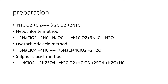Next method is the hydrochloric acid method. Sodium chlorate NaClO3 is treated with hydrochloric acid. You are going to get 5 moles of sodium chloride, 4 moles of Chlorine Dioxide, and 2 moles of H2O. Next method, sulfuric acid method. Here, perchlorate is treated with sulfuric acid. Then you are going to get Chlorine Dioxide, chloric acid, sulfate, and H2O.